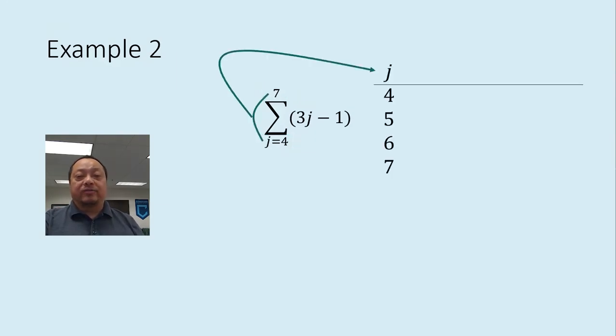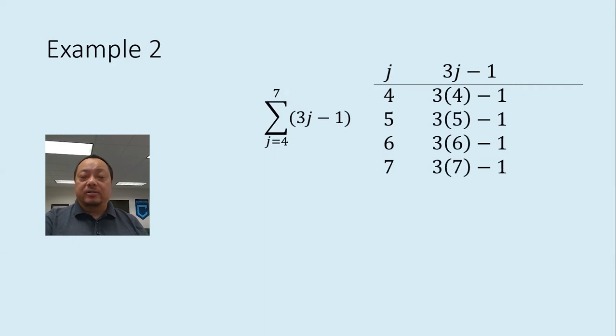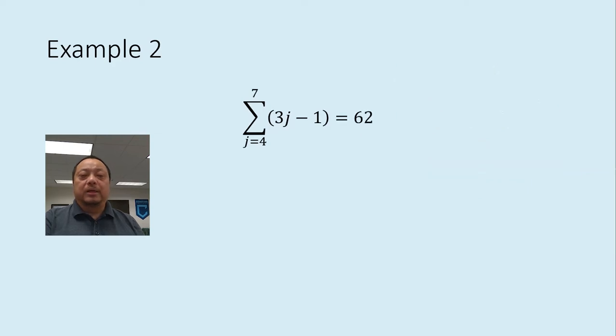Now make our table. The index values go in this column, starting at 4, ending at 7, going through all the numbers in between. And the computation is 3j minus 1. It goes over here. Let's fill it out. First line, j equals 4. Plug that in, we get 3 times 4 minus 1. Do like that for the rest of the lines. And compute what they are equal to. Now add, 11 plus 14 plus 17 plus 20 equals 62. The answer is 62. The sum for j equals 4 to 7 of 3j minus 1 equals 62.